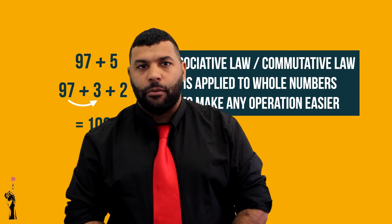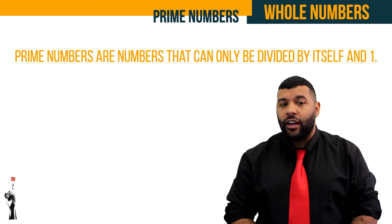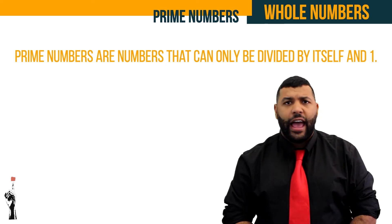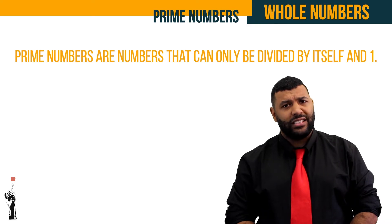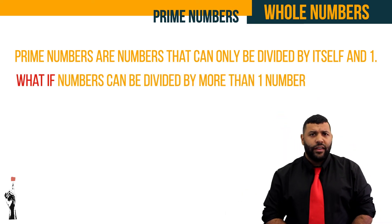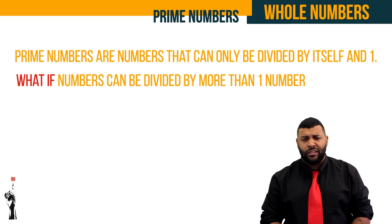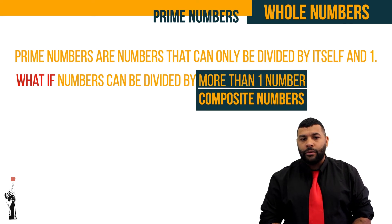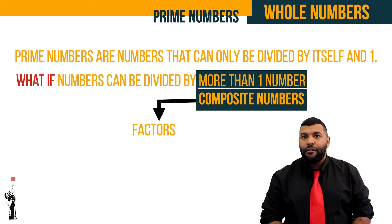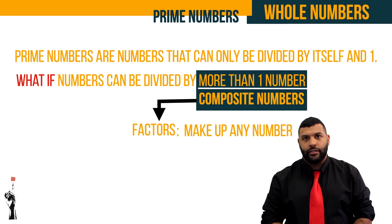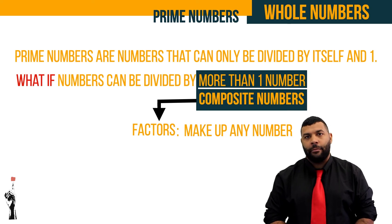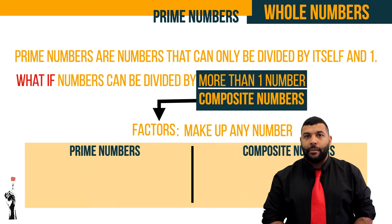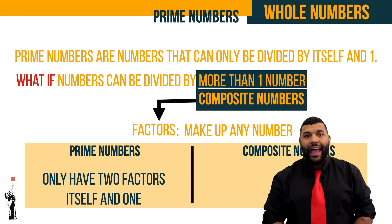Now we move on to the second part of this lesson: prime numbers. What are prime numbers? Prime numbers are numbers that are only divisible by themselves and one. If we define prime numbers using factors, prime numbers only have two factors: themselves and one.